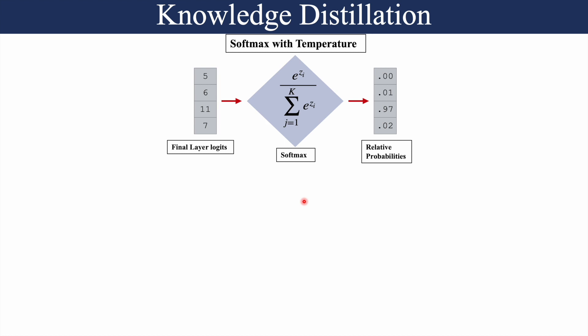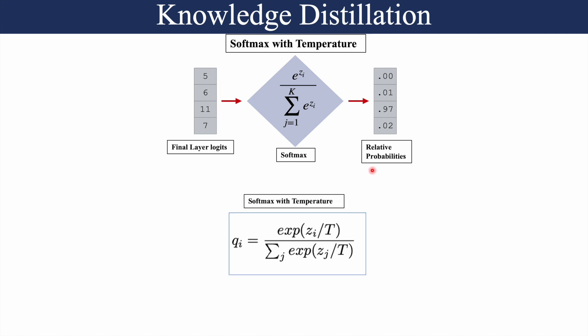The next concept introduced in the paper was softmax with temperature. The normal softmax equation takes in the final layer logits and produces relative probabilities. Softmax with temperature differs in that the final layer logits are divided by T, a hyperparameter representing temperature. The effect of this temperature on the output relative probabilities and its subsequent effect on the loss is what we will see in a Jupyter notebook.